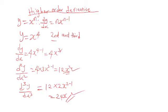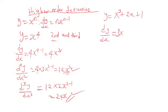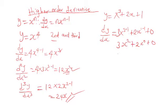Now we can go further into solving one more question on second and higher order derivatives. What if you're given y equals x³ plus 2x plus 1, to find the second and third derivative? Let's get the first derivative: dy/dx equals — n is 3, so 3x to the power 3 minus 1, plus differentiating 2x gives 2 times x to the power 1 minus 1. Differentiating a constant is 0, so we now have 3x² plus 2.